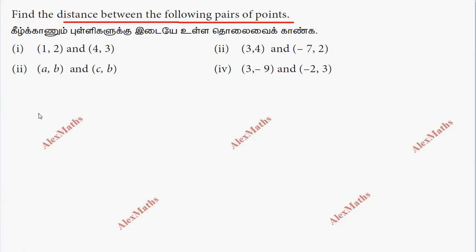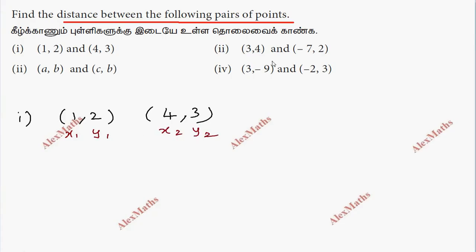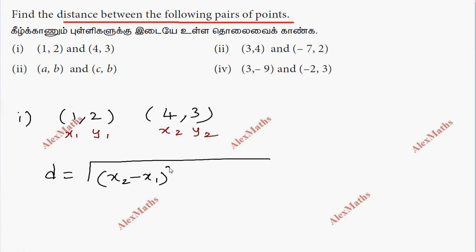We will take the first substitution. The points are (1, 2) and (4, 3). So the points are labeled x1, y1 and x2, y2. The distance formula is: distance equals the square root of (x2 minus x1) whole square plus (y2 minus y1) whole square.